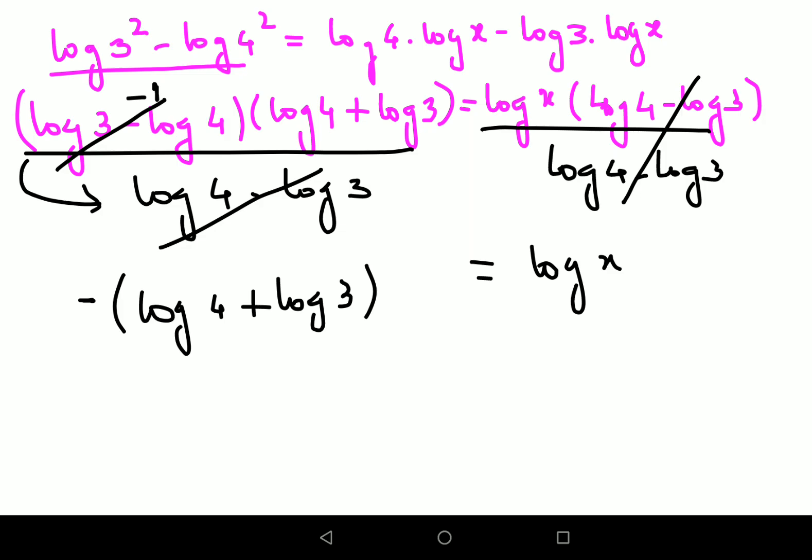Now see, log of a product can be written as log a plus log b. So I can do the reverse. Here, this can be written as log of 4 times 3. This minus, basically this minus 1, can go on top because log of a to the power m is nothing but m log a. So here, this is still log x.